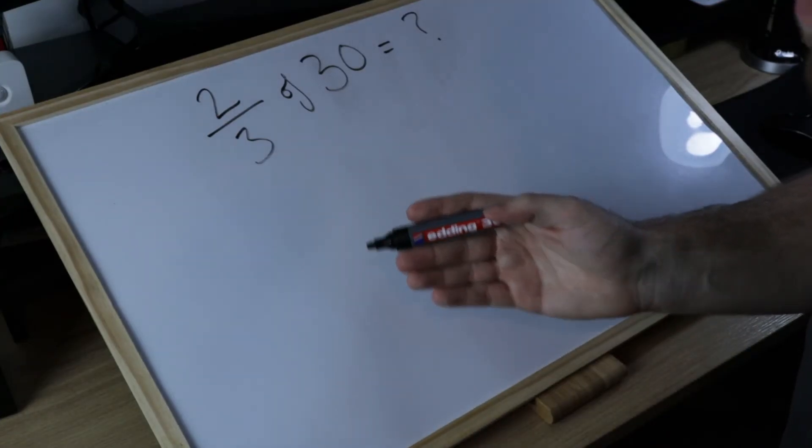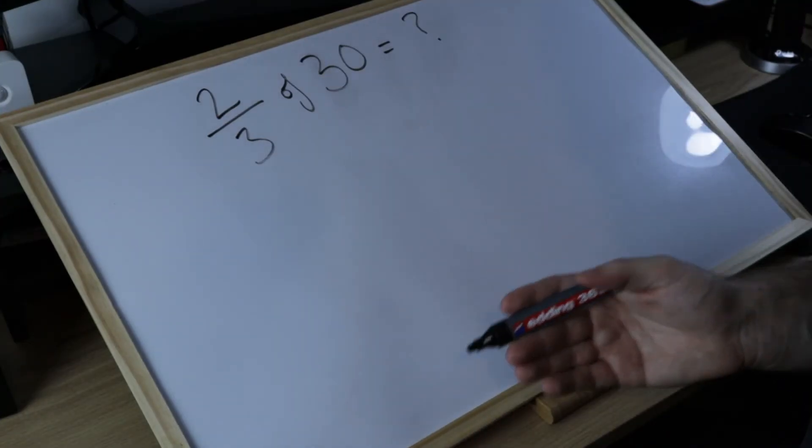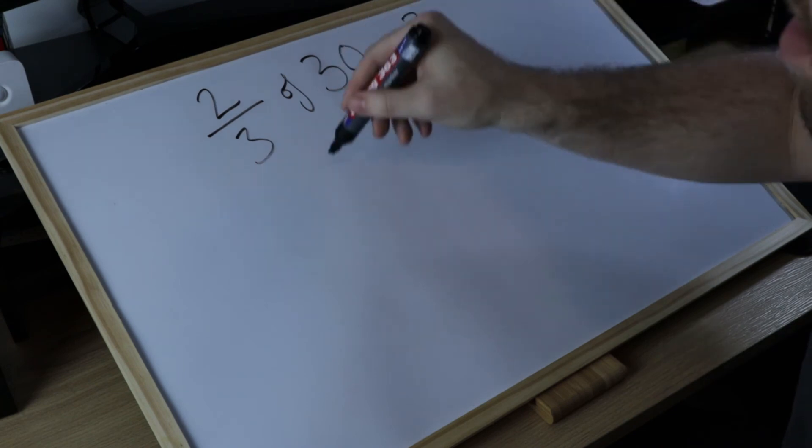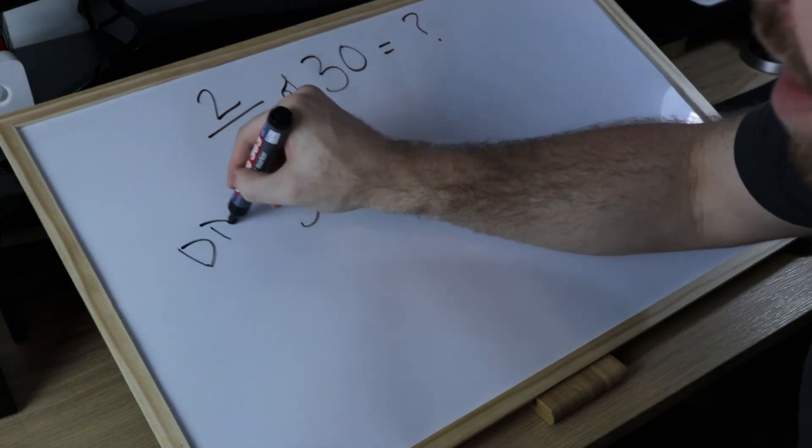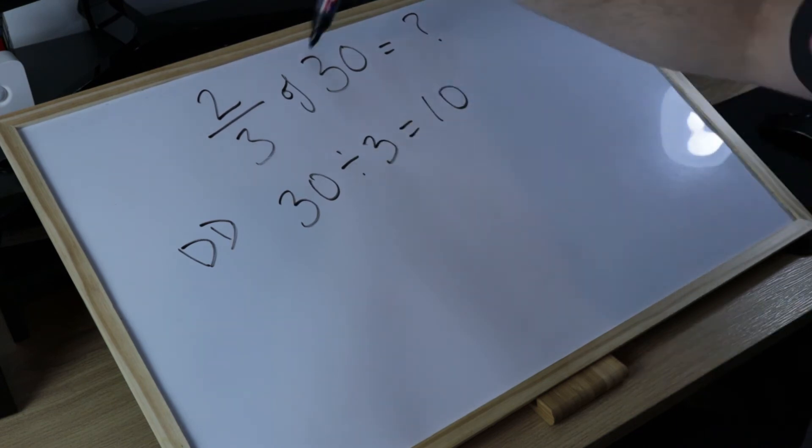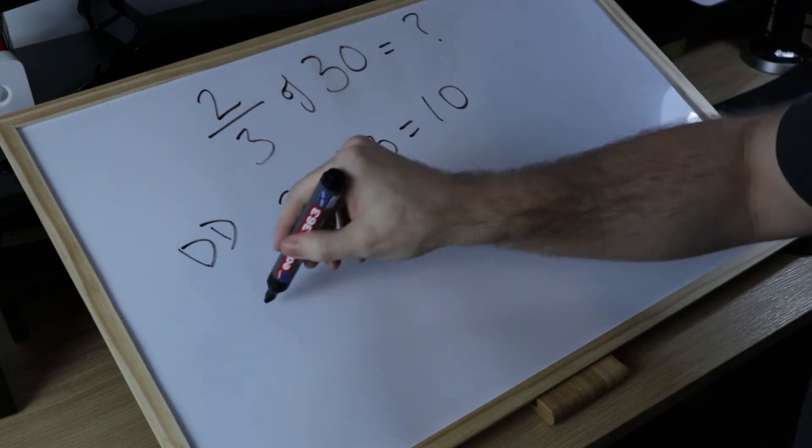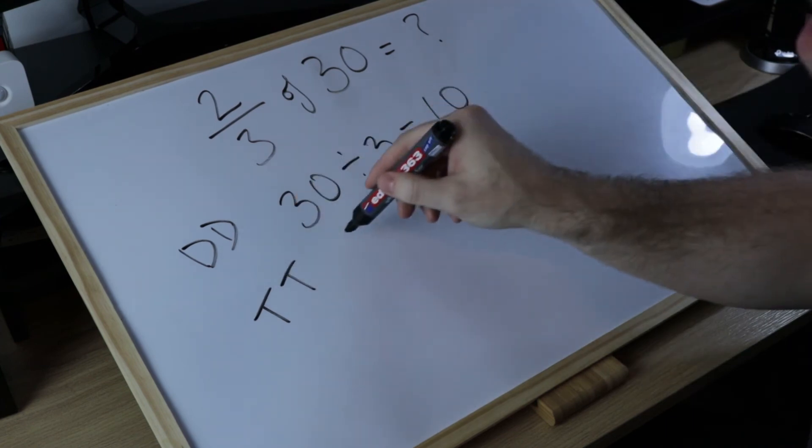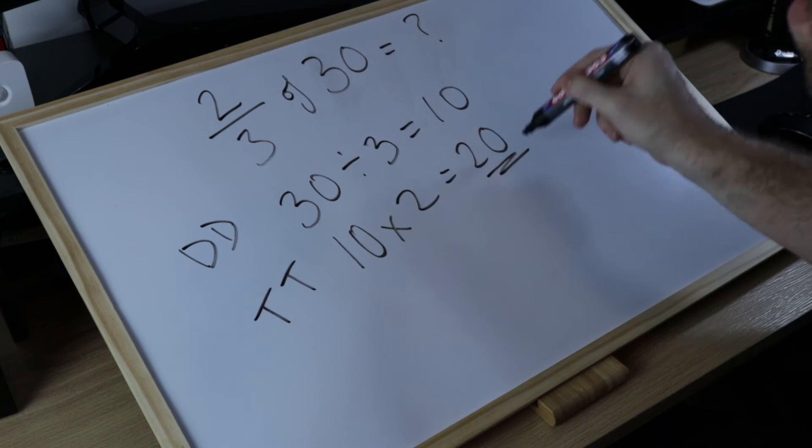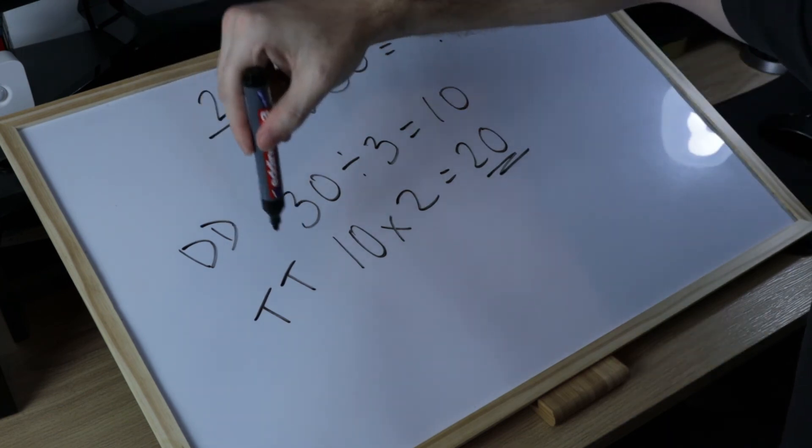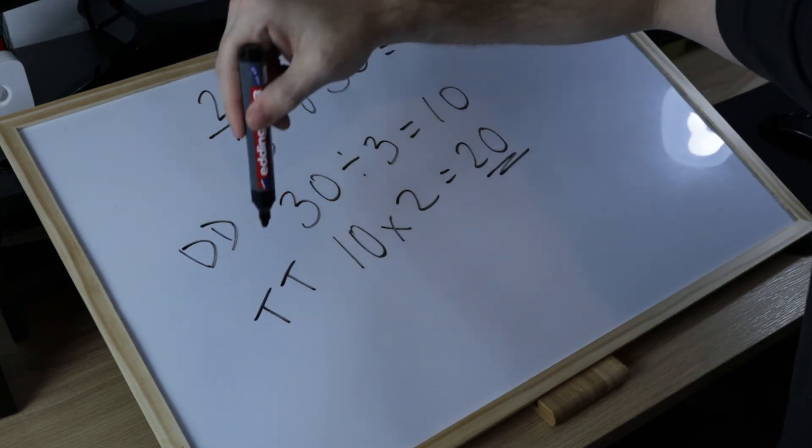Now you might be thinking to yourself there's a much quicker method to answer this and you'd be right. We can take 30 as our whole and divide by the denominator, dd, and we get 10, and then we can times it by the top or the numerator, tt. This is a lovely mnemonic which does work and it does give us results. The answer is 20. Dd tt: divide by denominator, times by the top.